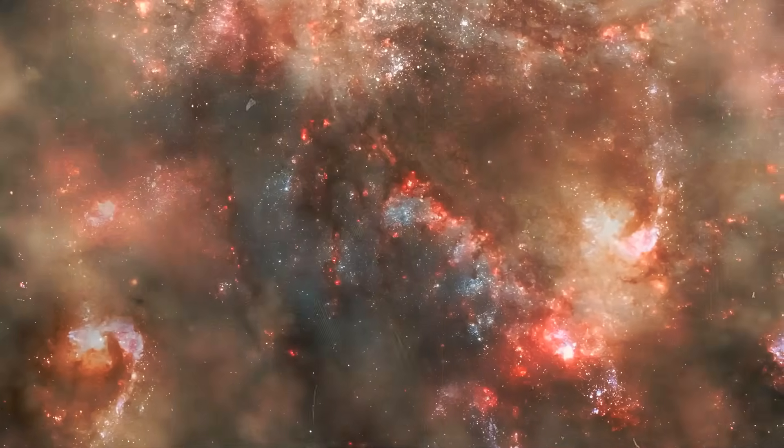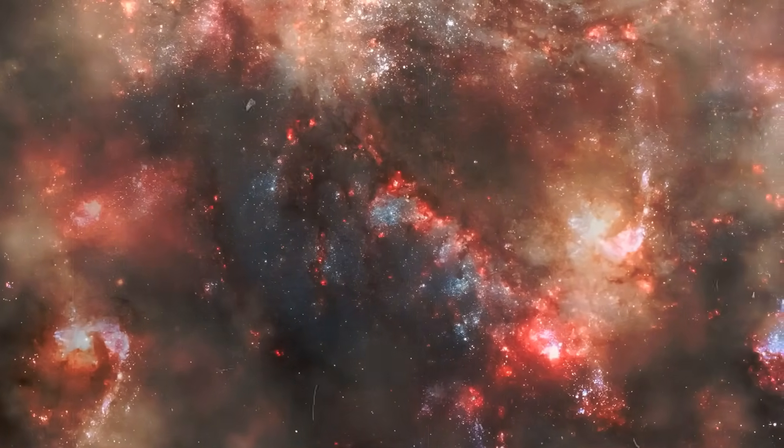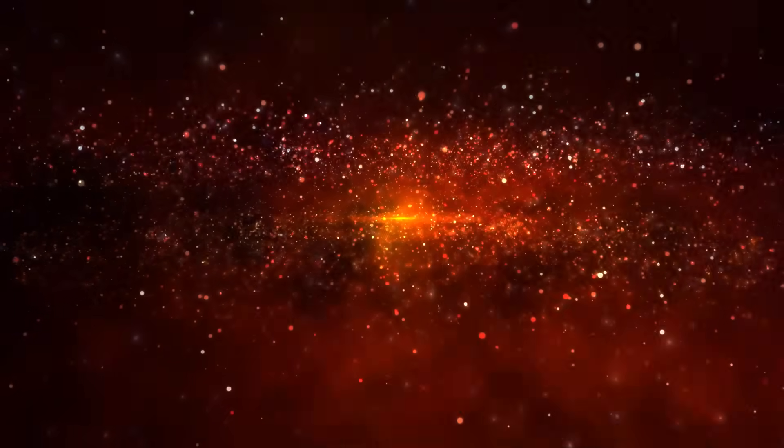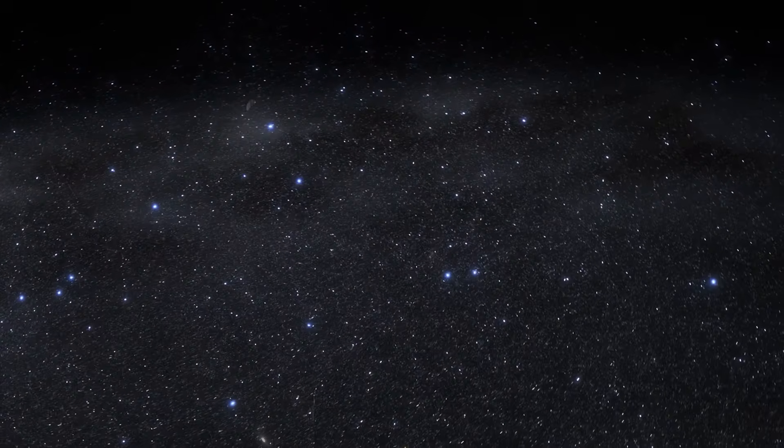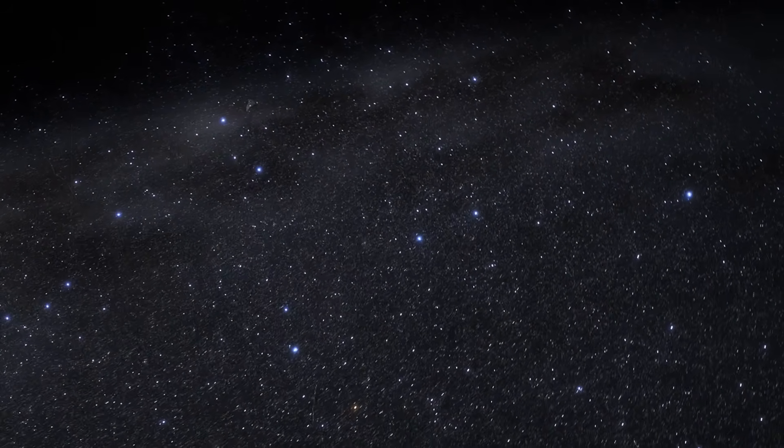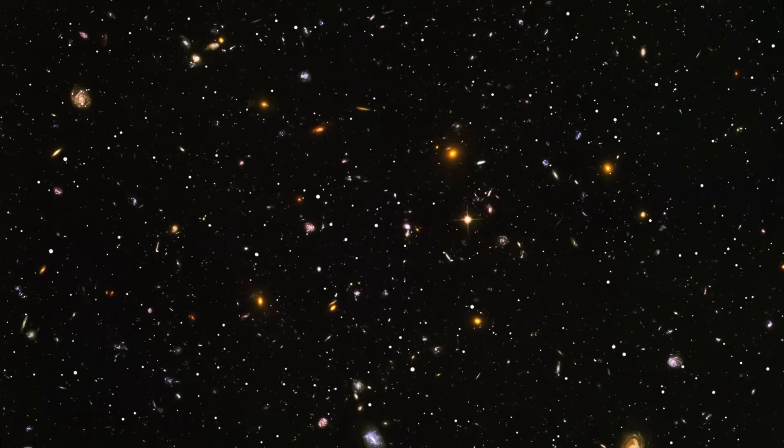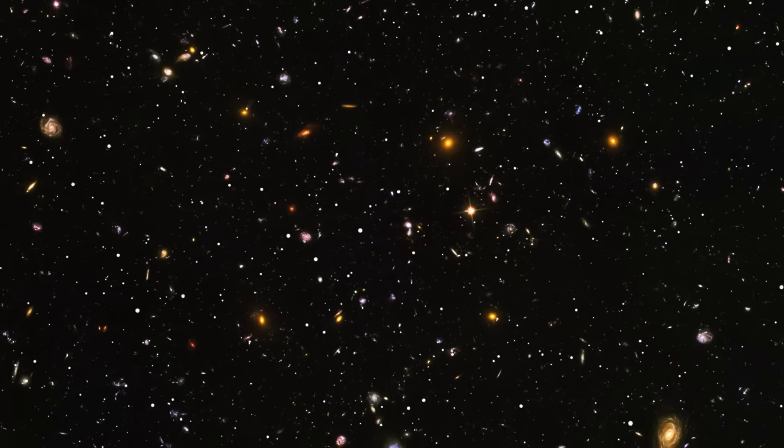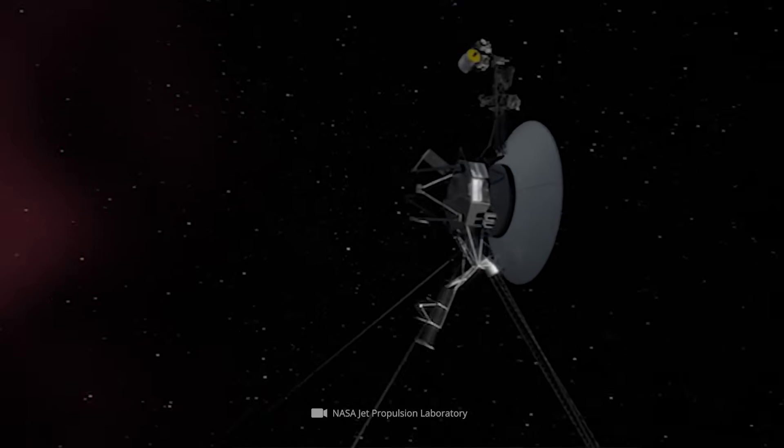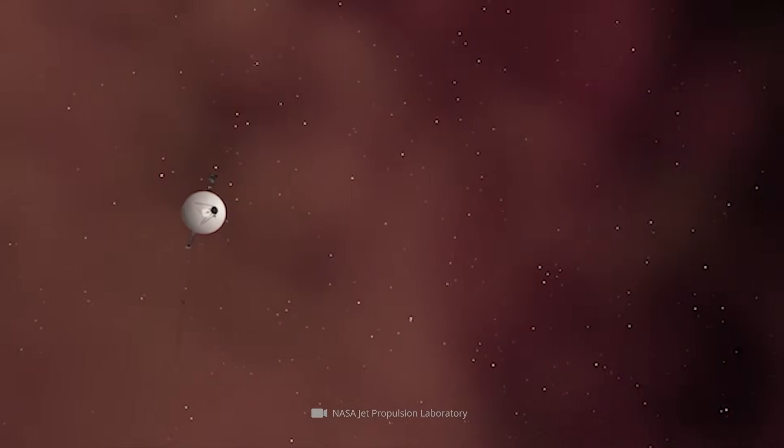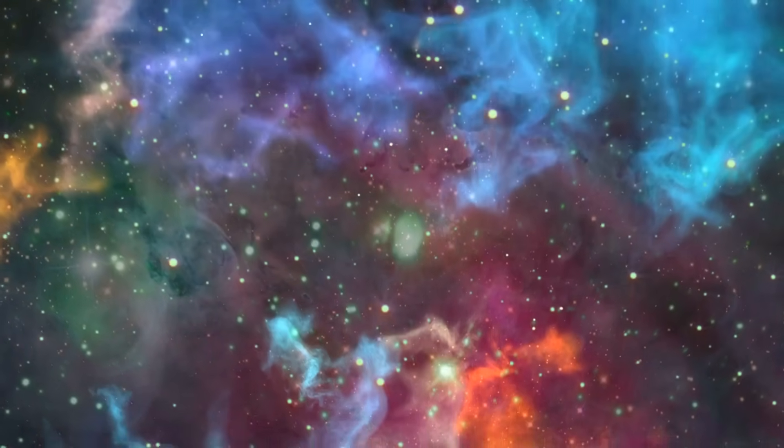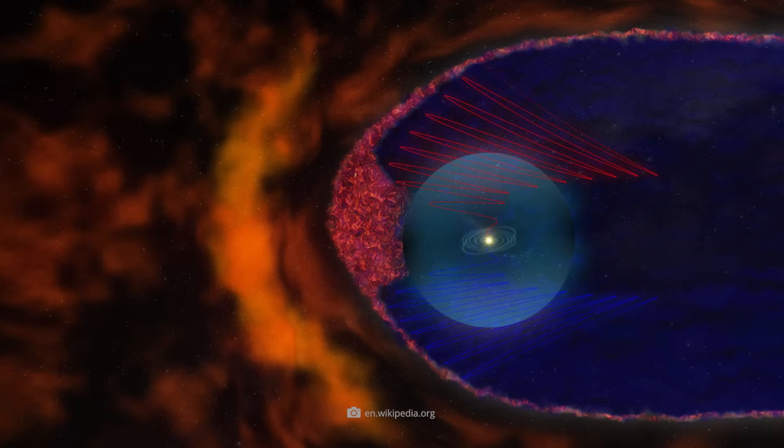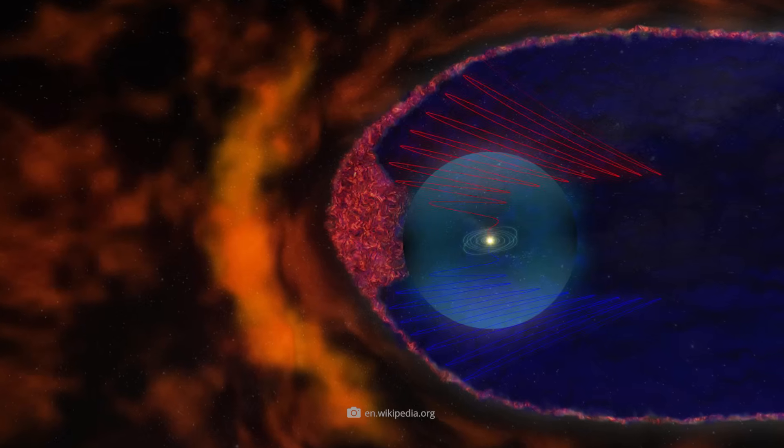In addition, Voyager 2 was able to directly measure the plasma density in interstellar space and show that, at around 20 electrons per cubic centimeter, it's much higher than in the inner solar system. The investigation of the interstellar magnetic field revealed that it's relatively uniform and stable, and that its transition at the heliopause is smoother than expected. All in all, it can be said that the heliopause is fundamentally much more complex than a clearly defined, fixed boundary. Instead, it's more of a dynamic transition zone where solar and interstellar plasma interact with each other.